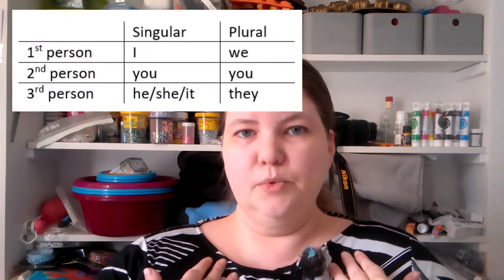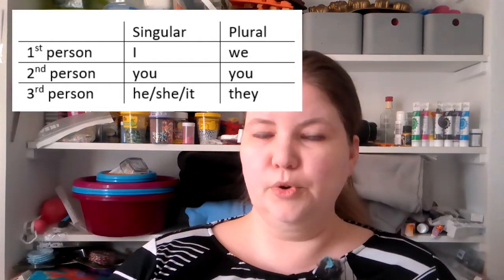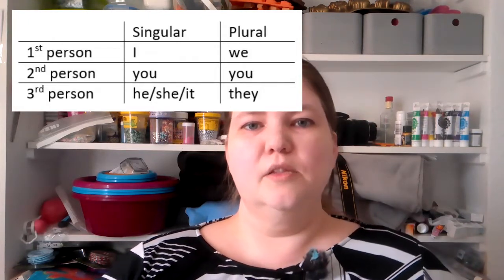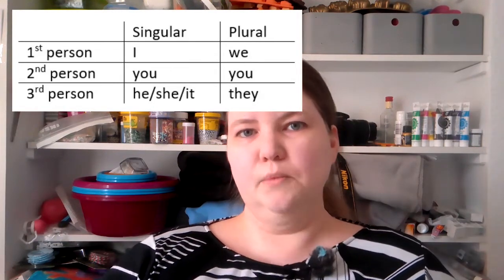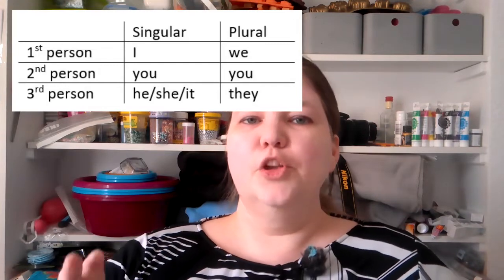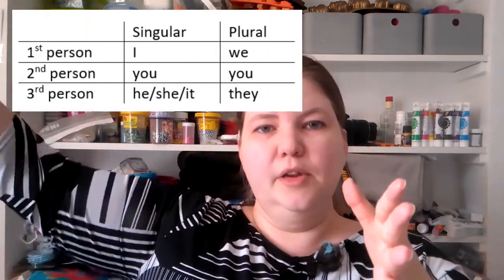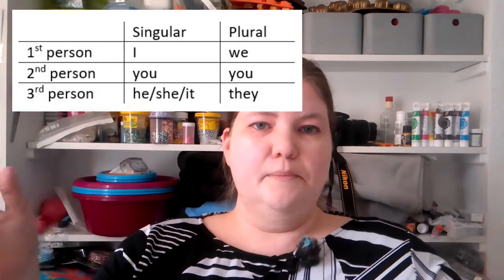We use the terms singular and plural — singular meaning one person and plural meaning many. There are three different forms: first person, second person, and third person. A first person pronoun is one that includes yourself, so "I" is a first person pronoun. "We" is a plural first person pronoun — something that includes the one speaking. Second person is the person you are addressing — I am talking to you, that is second person. Third person is when you are referring to a person that is not the one you are addressing. So, I am talking to you, but I am talking about him, her, he, she, it, they, them, etc.